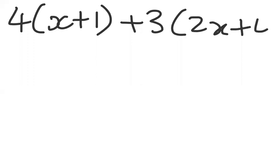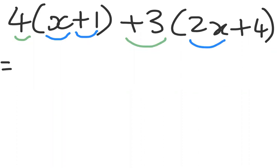The last example is bigger: 4(x + 1) + 3(2x + 4). I'll go a little faster since we covered the detail in previous examples. We have 4 multiplied by each term in the first bracket — x and plus 1 — and plus 3 multiplied by each term in the second bracket — 2x and plus 4. Each bracket has two terms, distinguished by a plus sign.